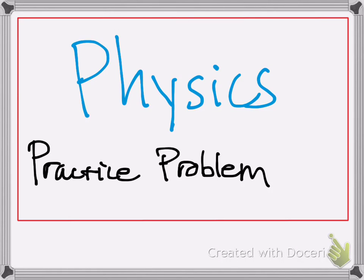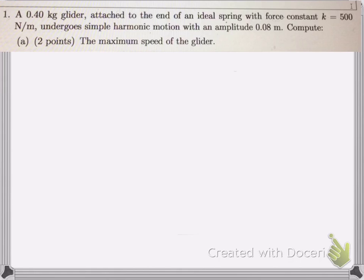Hello, YouTube. Today we're going to be doing a physics practice problem on simple harmonic motion. A 0.4 kilogram glider attached to the end of an ideal spring with force constant k equals 500 newton per meter undergoes simple harmonic motion with an amplitude of 0.08 meters. Compute the maximum speed of the glider.